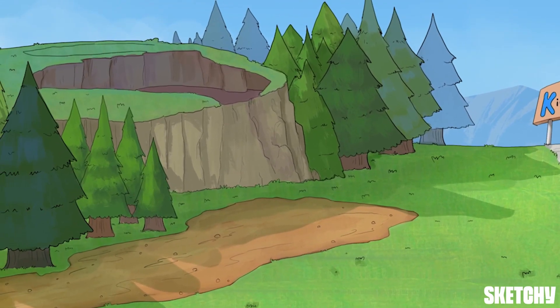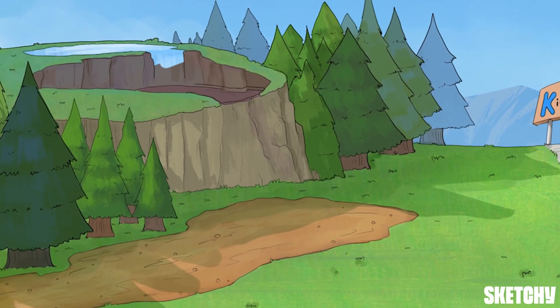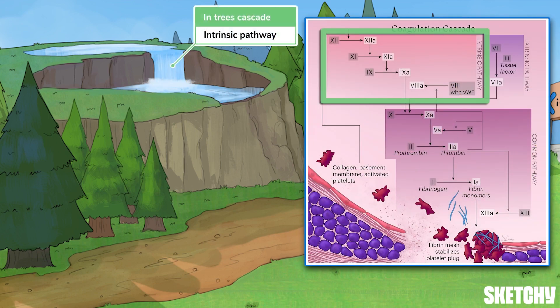All right, with that out of the way, let's survey the area, starting with this cascading waterfall within the trees, which will represent the intrinsic pathway.